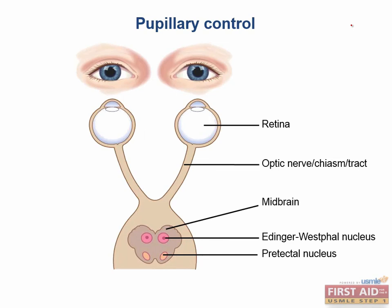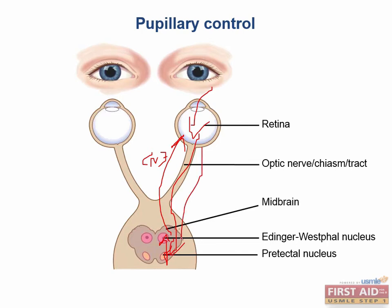The pupillary light reflex is actually much faster than actual visual processing. Light enters the retina and reaches the ipsilateral pretectal nuclei through the optic nerve. Nerves originating from the pretectal nuclei then synapse into the Edinger-Westphal nucleus, which affects the parasympathetic functions of cranial nerve 3, leading to pupillary constriction when light is shone into the eye. The pupillary light reflex is thus afferent through cranial nerve 2 and efferent through cranial nerve 3.